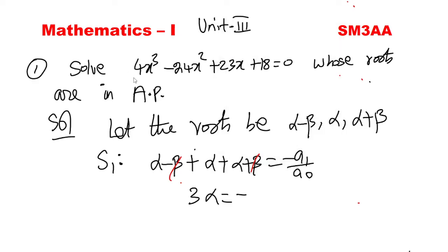In the given equation, the x³ coefficient is A0, the x² coefficient is A1, the x coefficient is A2, and the constant is A3. So A0 = 4, A1 = -24, A2 = 23, and A3 = 18.